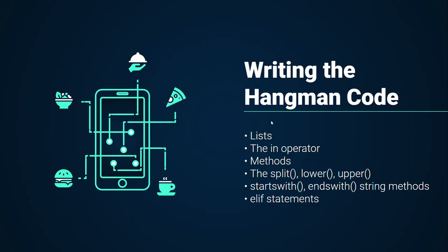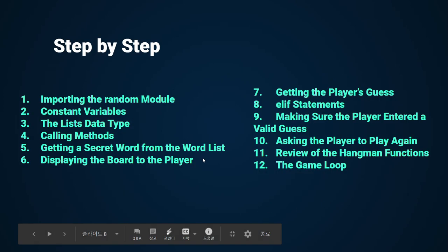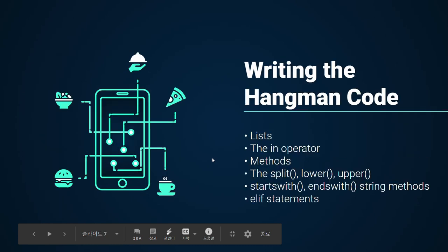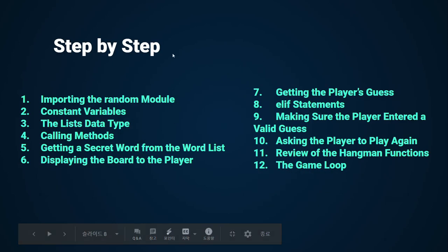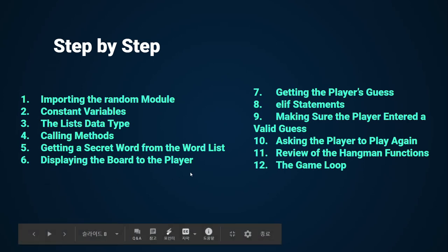Now we move on to writing our Hangman code. There are six concepts: the if statement, lists, the in operator, methods — split, lower, upper, startswith, endswith — string methods, and elif statements. Most of these are familiar to you because we have learned them before. Now we move to our step-by-step method. I have divided all the Hangman code into 12 steps, and we will take a deep look at the next pages.